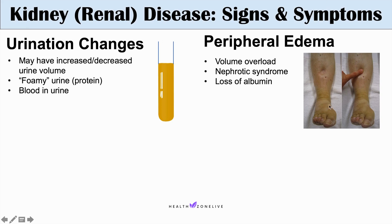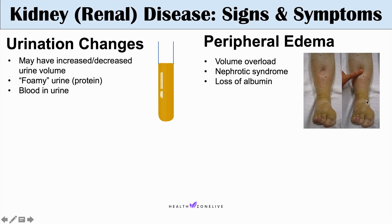The next sign we can see with kidney disease is hypertension, or high blood pressure. This is due to increased intravascular volume. If an individual is not urinating enough volume, they can have increased fluid in their cardiovascular system, leading to high blood pressure.